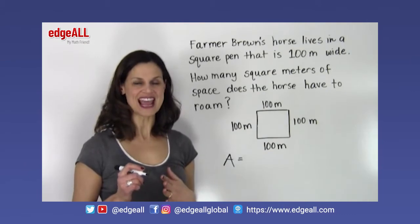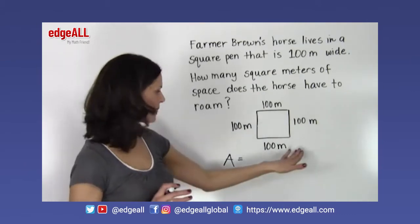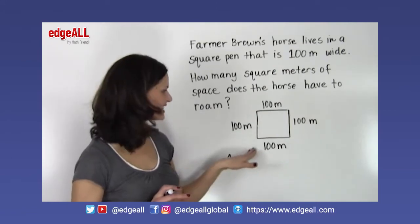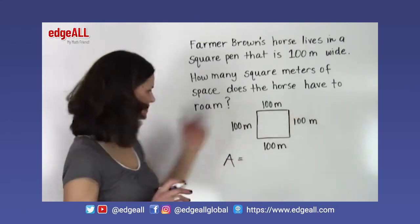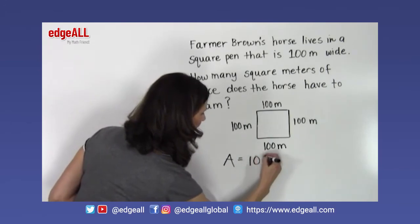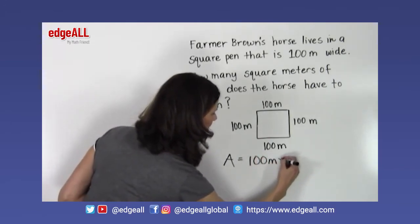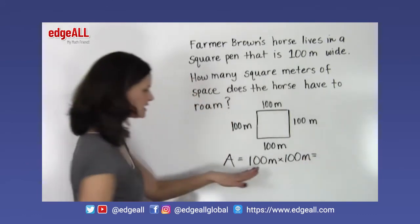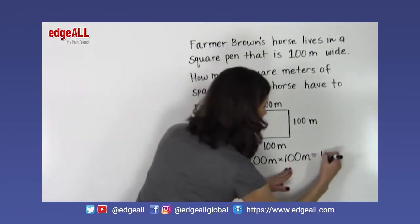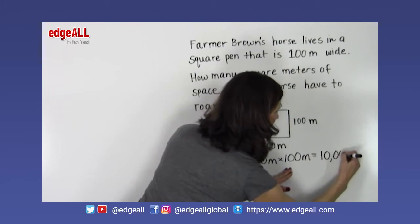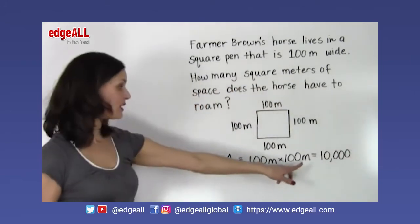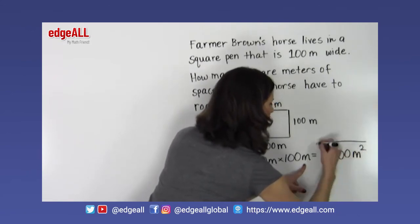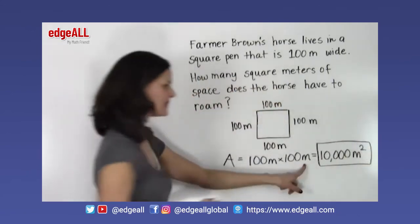We multiply the base times the height, or the length times the width. In this problem, we multiply 100 meters times 100 meters. 100 times 100 equals 10,000, and our units are meters squared, or square meters.